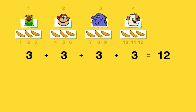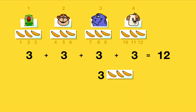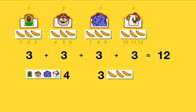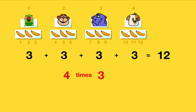Let us look at three plus three plus three plus three equals twelve in another way. Each person has three bananas, and there are four people, so altogether that is four times three bananas. Four times three — we say this is four times three.